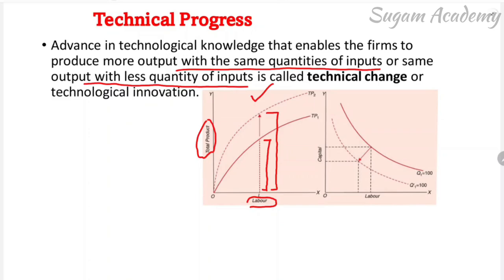In the isoquant diagram, the X-axis represents labor and the Y-axis represents capital. Initially, to produce Q1 level of output — say 100 units — a firm used L1 labor and C1 capital. Due to technical progress, to produce the same 100 units of output, the isoquant shifts downward, and now less labor and less capital are required. This is the case of technical progress.